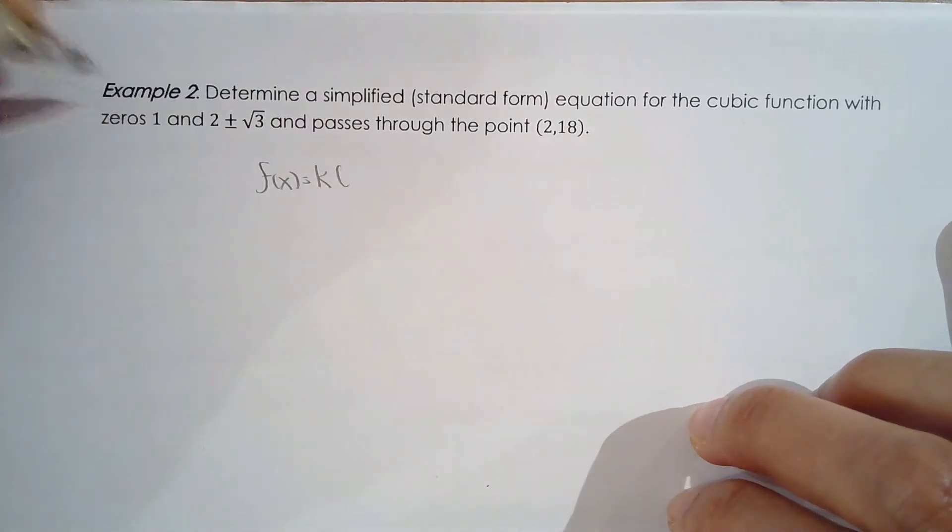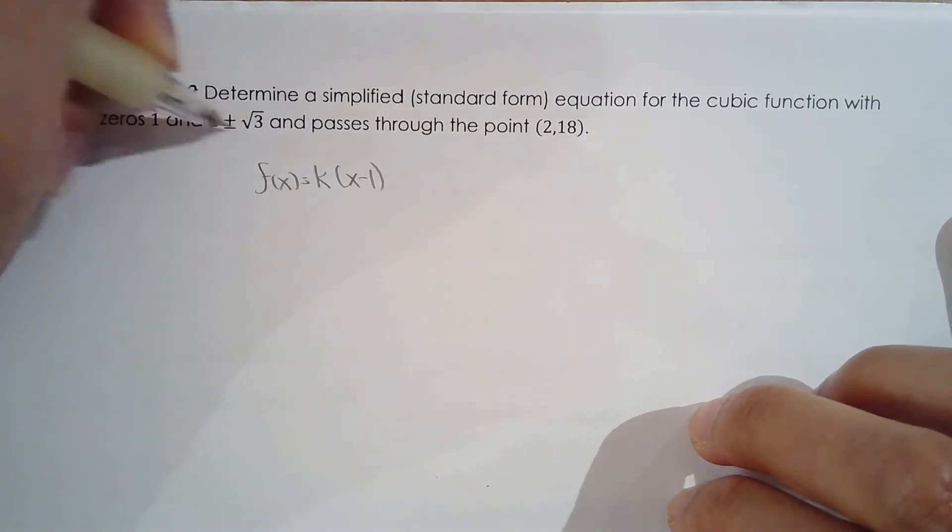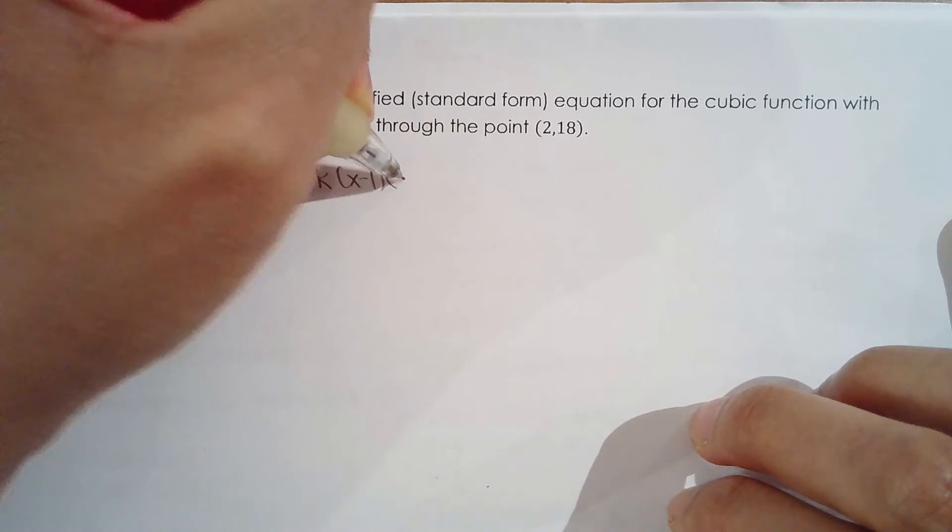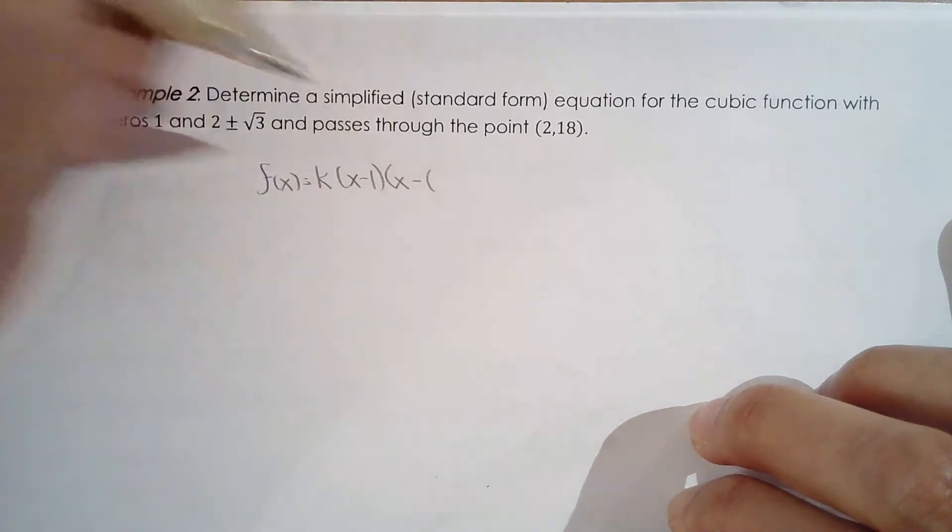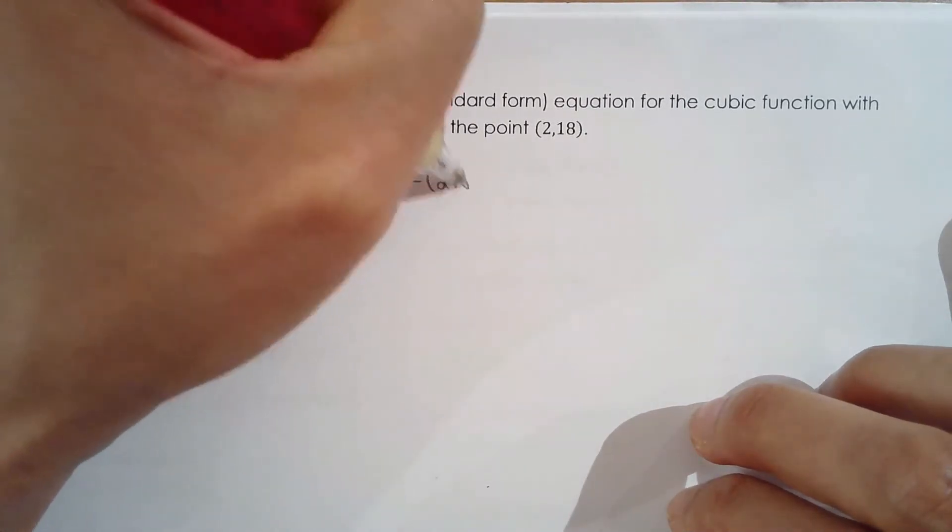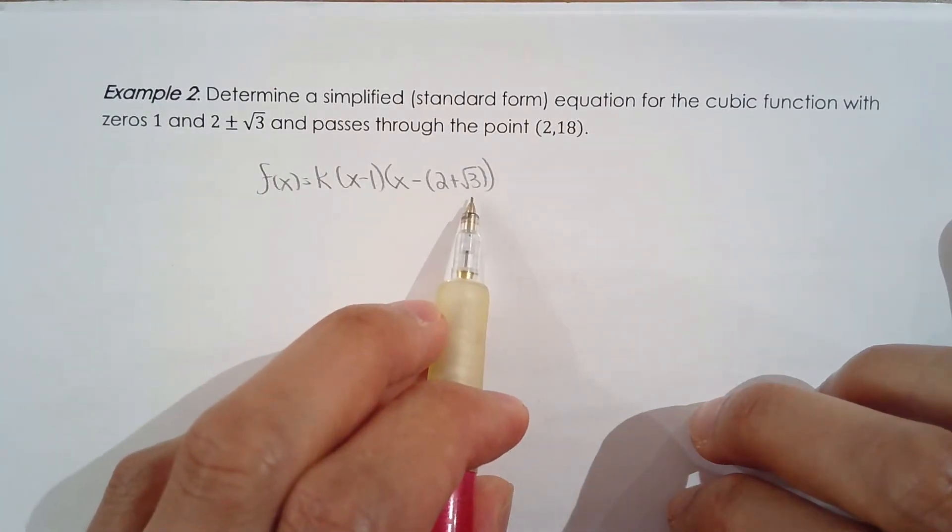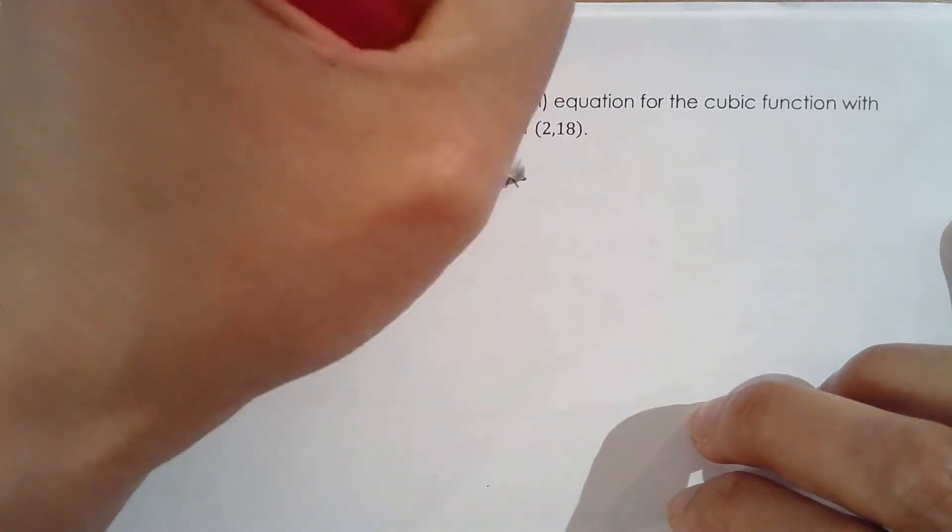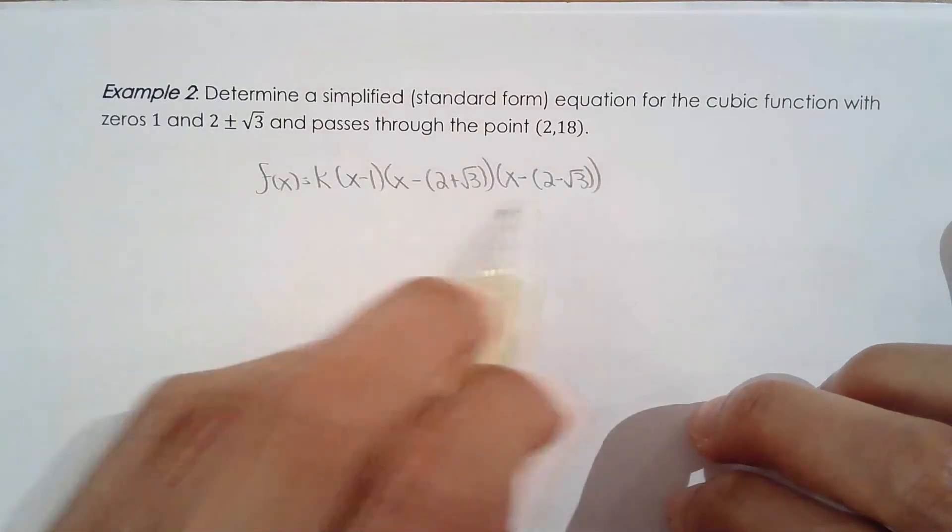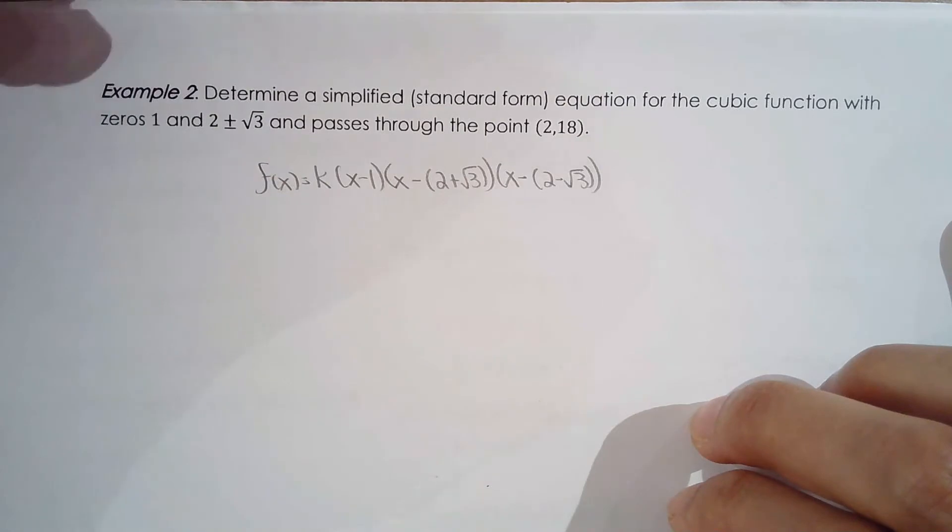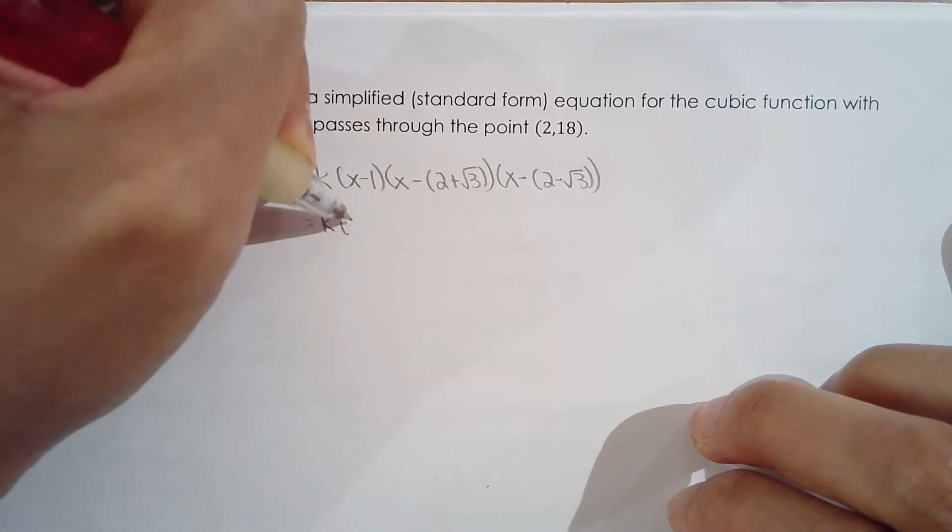So f of x is equal to k. All right, so now we have a zero of 1. That one's easy. That means the factor is x minus 1. Okay, so what about 2 plus root 3? So a lot of students they write x plus 2 plus root 3, but be careful. If the zero is 2 plus root 3, that means the factor is x minus all of 2 plus root 3. And the other zero is 2 minus root 3, so it's x minus all of 2 minus root 3. Okay, so you have to generate the factors correctly. Otherwise, you won't get the right equation.